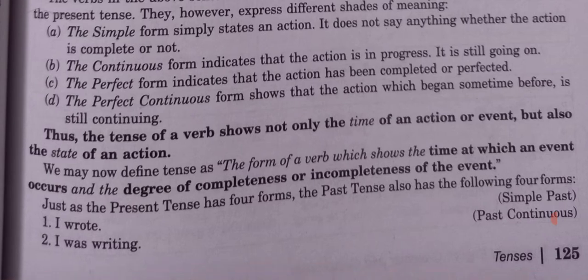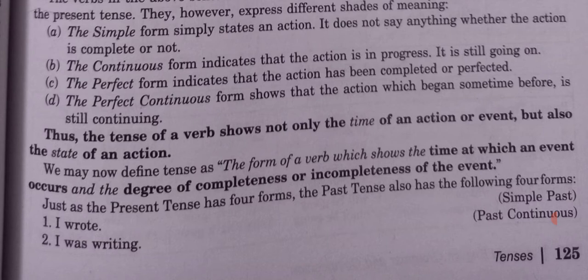Thus the tense of the verb shows not only the time of an action or event but also the state of the action. We may now define tense as the form of a verb which shows the time at which an event occurs and the degree of completeness or incompleteness of the action.